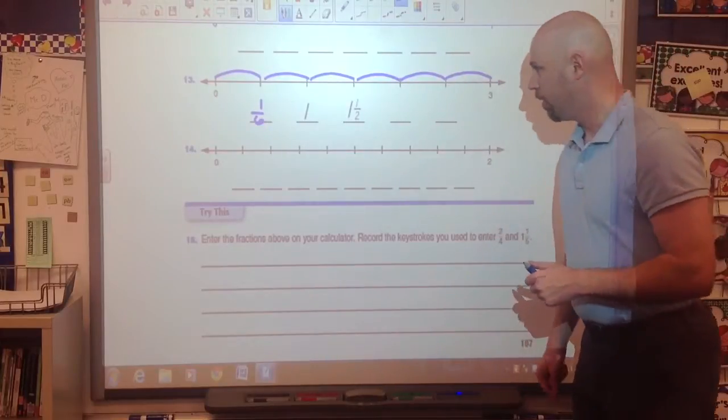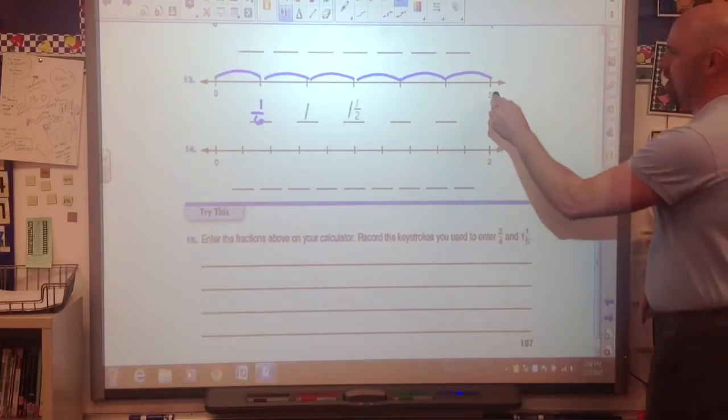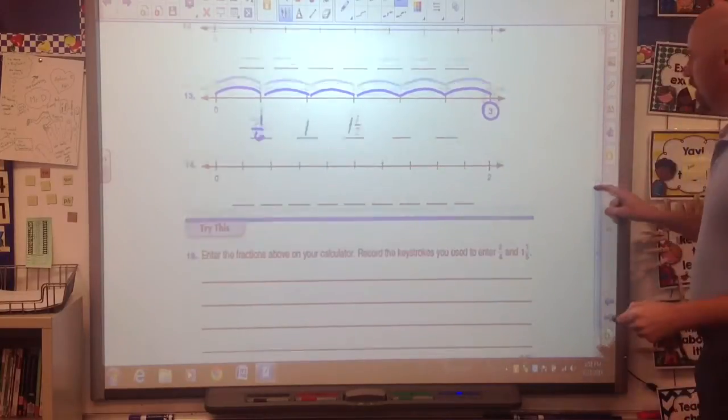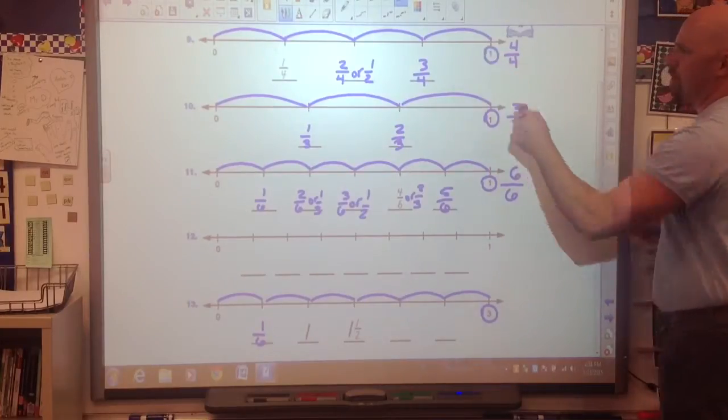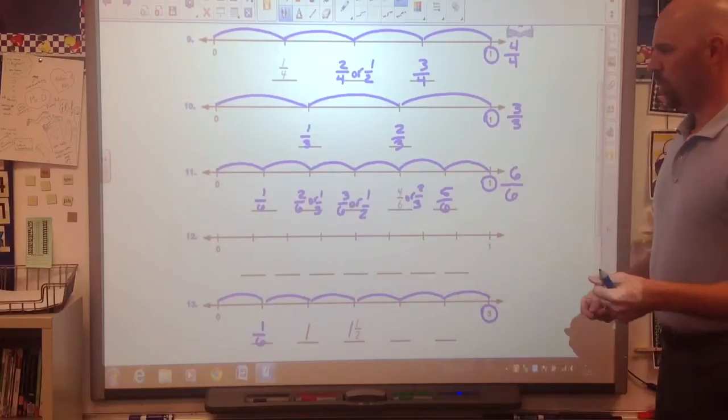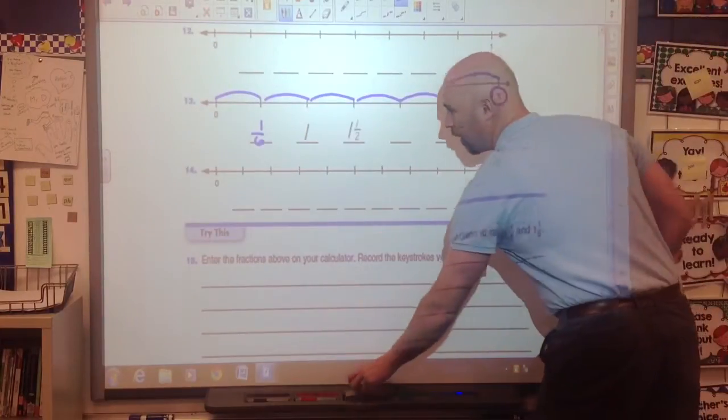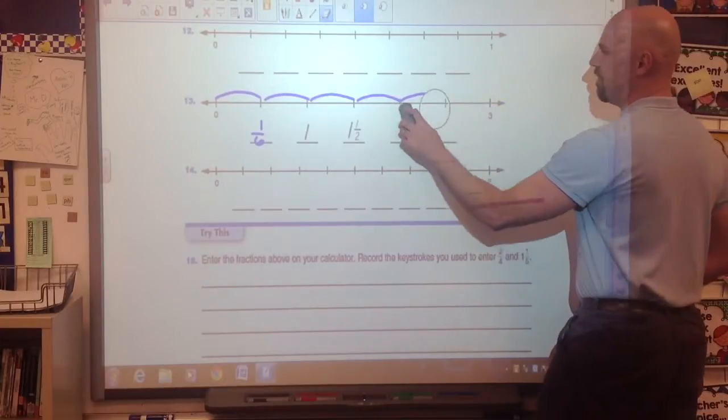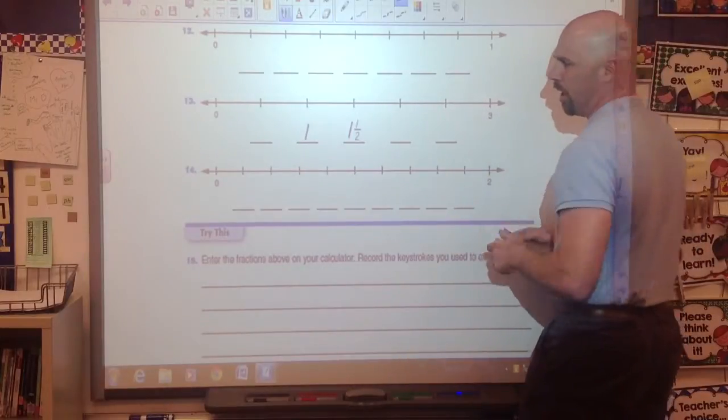So we stop there and we go, well, what's the difference between this problem and the problems we've done? And the kids notice, well, this is a three down here. Up here, that was a one. That was a one. That was a one. We were counting from zero to one on all those problems. Well, let's do that down below. Let's find what one is first, and we'll apply that rule to the entire number line.